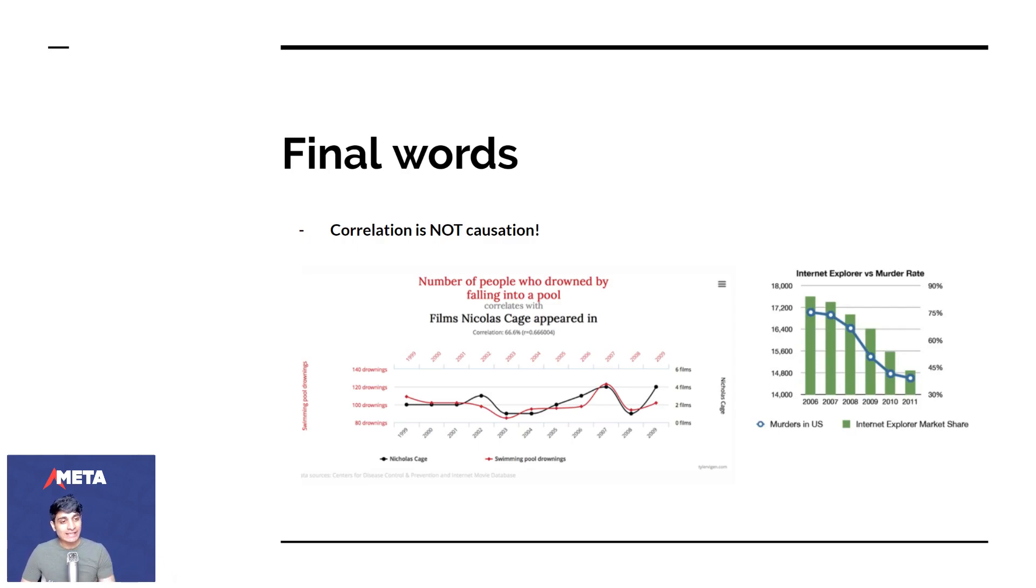On the other hand, you have Internet Explorer versus murder rate. As more and more people stopped using Internet Explorer, a lesser number of murders happened. Even though there's a very strong correlation between the two, we know for a fact that people switching browsers doesn't mean they go out killing people. These two things just happened at the same time. It's random chance. In the world, a lot of things happen due to random chance. I think I've said that a million times, but it's very important for you to understand this. You will prevent yourself from doing random stupid behaviors in life because you think that two things are causative when they might just be correlated.